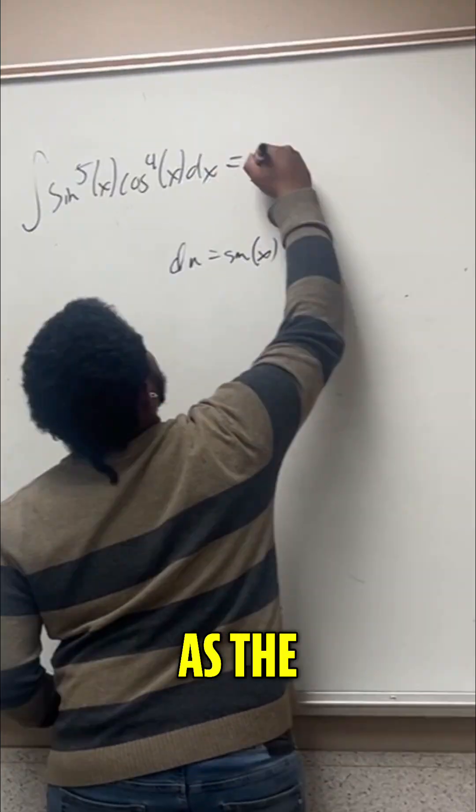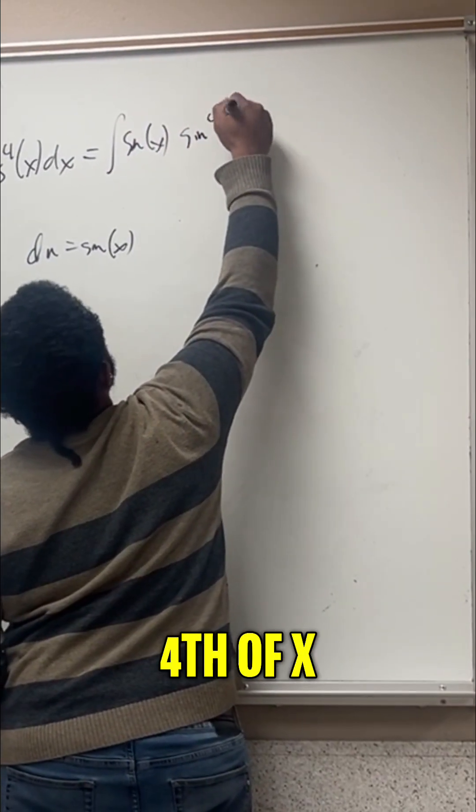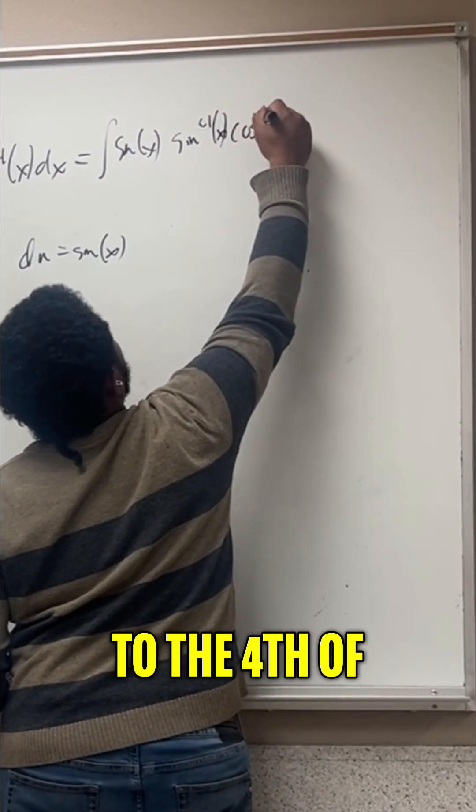So we'll rewrite this first as the integral of sine of x, that'll be our du, times sine to the fourth of x, times the cosine to the fourth of x dx.